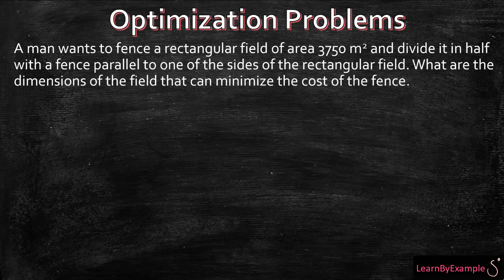The second problem says that a man wants to fence a rectangular field, so let's draw it as we're reading. The rectangular field has area 3,750 square meters and is divided in half with a fence parallel to one of the sides of the rectangular field.